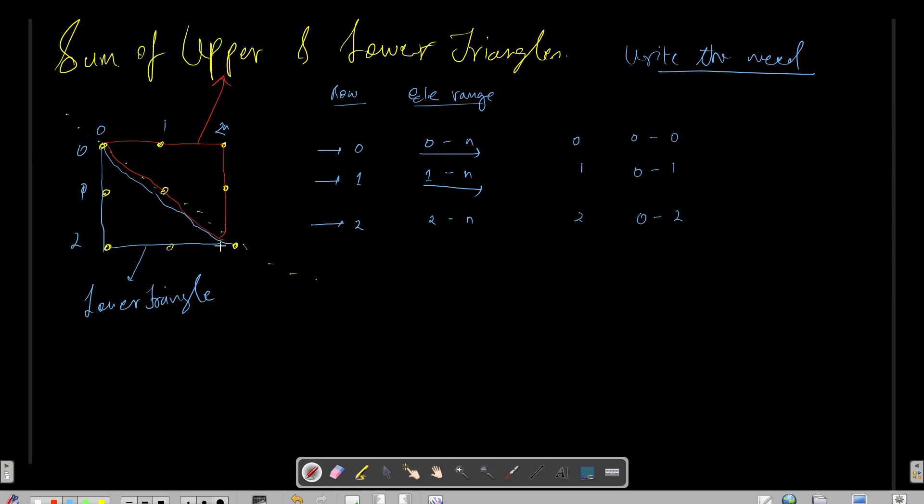Similarly for the lower triangle, for the respective rows, which elements do you need? For the first row you just need the first element, covering 0 to 0 in terms of row. For the second row you need the first two elements, so 0 to 1 in terms of column. For the third row you need to cover elements 0 till n. This can be handled by a simple for loop.